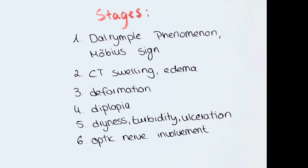In stage 3, deformation of the eyeball can be observed. Stage 4 presents with diplopia and blurry vision due to blocking and impairment of the function of the muscles of the eye. In stage 5, patients experience dryness, turbidity, and ulceration of the cornea due to improper closing of the eyelids.